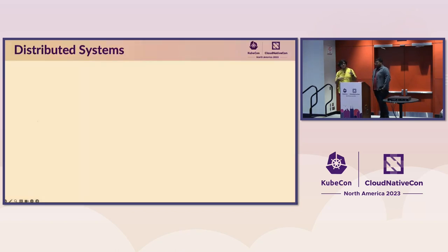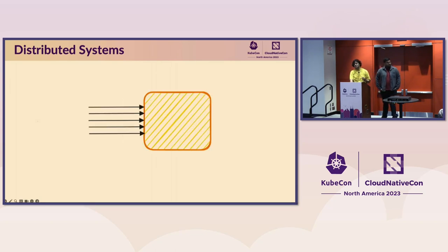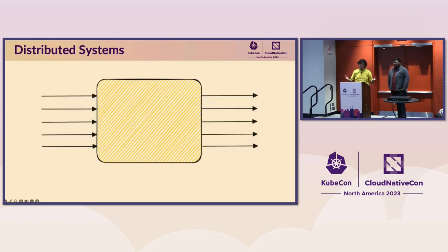So we've all heard about this term distributed systems. But to set some context, let's say you have an app. It takes a request. It gives out a response. Things are good. But for some reason, the app starts becoming popular. You see a spike in traffic. You have a lot of requests that you weren't capable of handling just yet. So you think, I'm going to buy a bigger machine to run my app. Now you have more capacity to handle all this increased load.